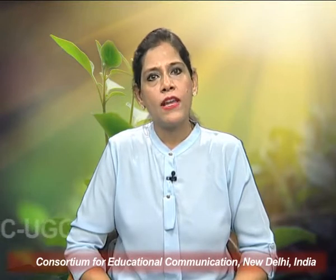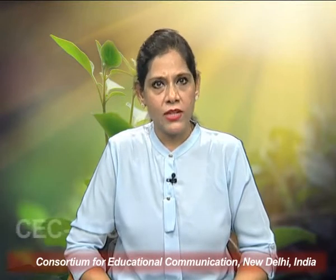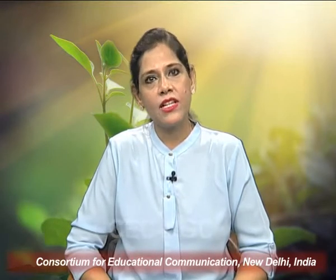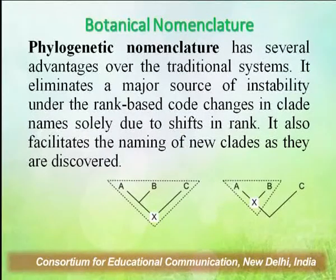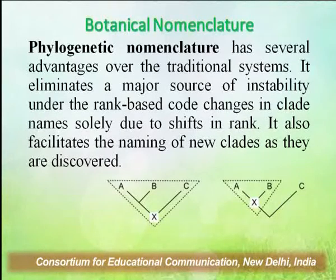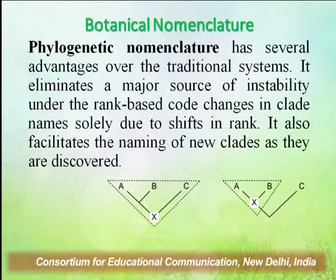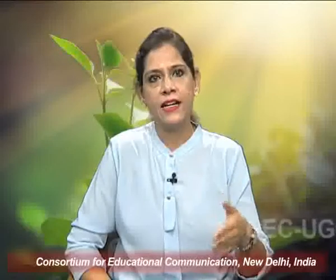Phylogenetic nomenclature has several advantages over the traditional systems. First, it eliminates a major source of instability under the rank-based code — changes in clade names solely due to shifts in rank. Second, it also facilitates the naming of new clades as they are discovered.